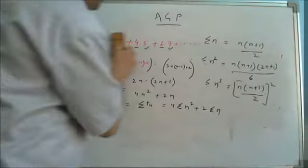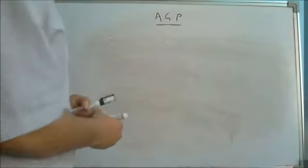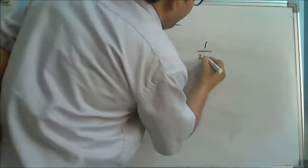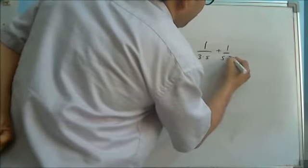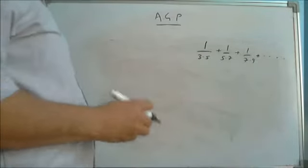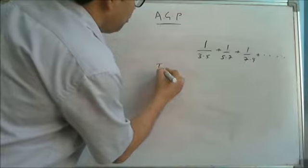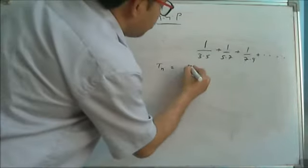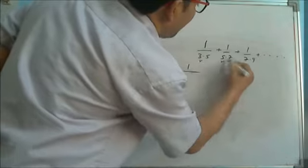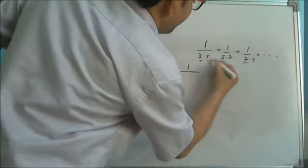One more method I am discussing here. This is very important — note the difference method. Suppose a problem is given: 1/(3×5) + 1/(5×7) + 1/(7×9) ... Firstly, follow what pattern is there in the series. I am finding the nth term of the series, which is actually one divided by the product of two things. The pattern: two things are following — 3, 5, 7 in the first AP, and 5, 7, 9 in the second AP.